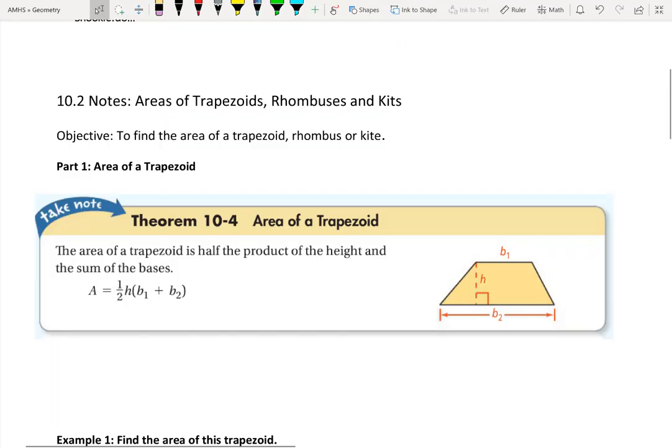Hey everybody, this is Mrs. Snook with Section 10.2, Areas of Trapezoid, Rhombuses, and Kites.